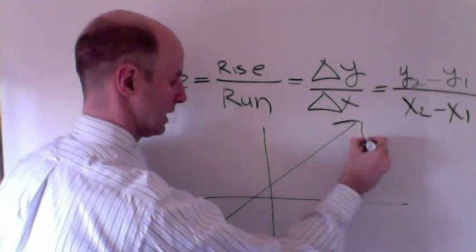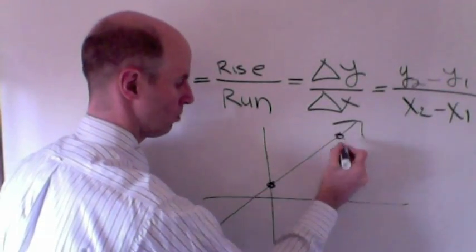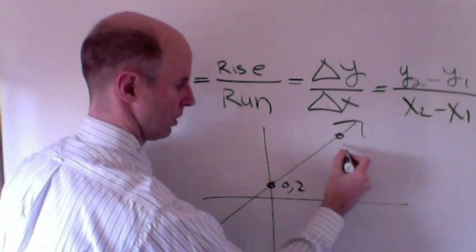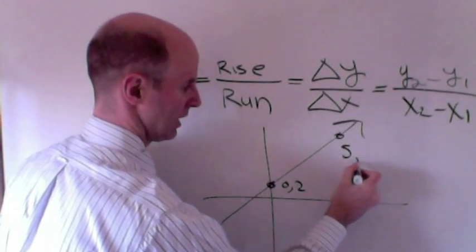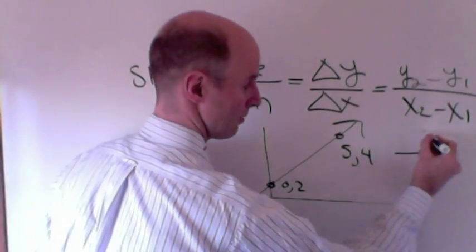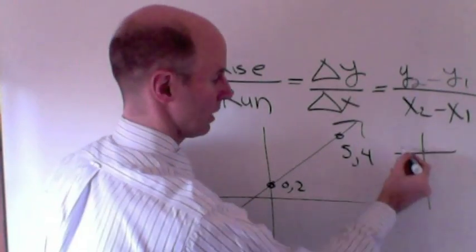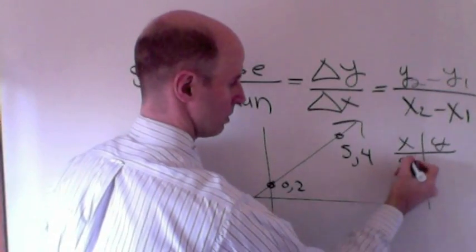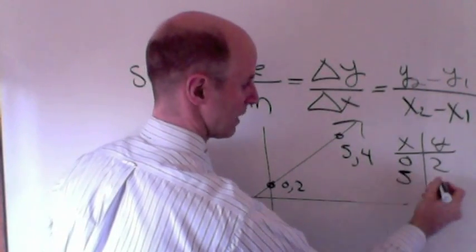If you had a line and you were given two points, like 0, 2 and let's say 5 and 4, I could do this. I'd first create a table of values. Always want to create a table of values. Here's my x's, here's my y's. The first point is 0, 2. The second point is 5, 4.